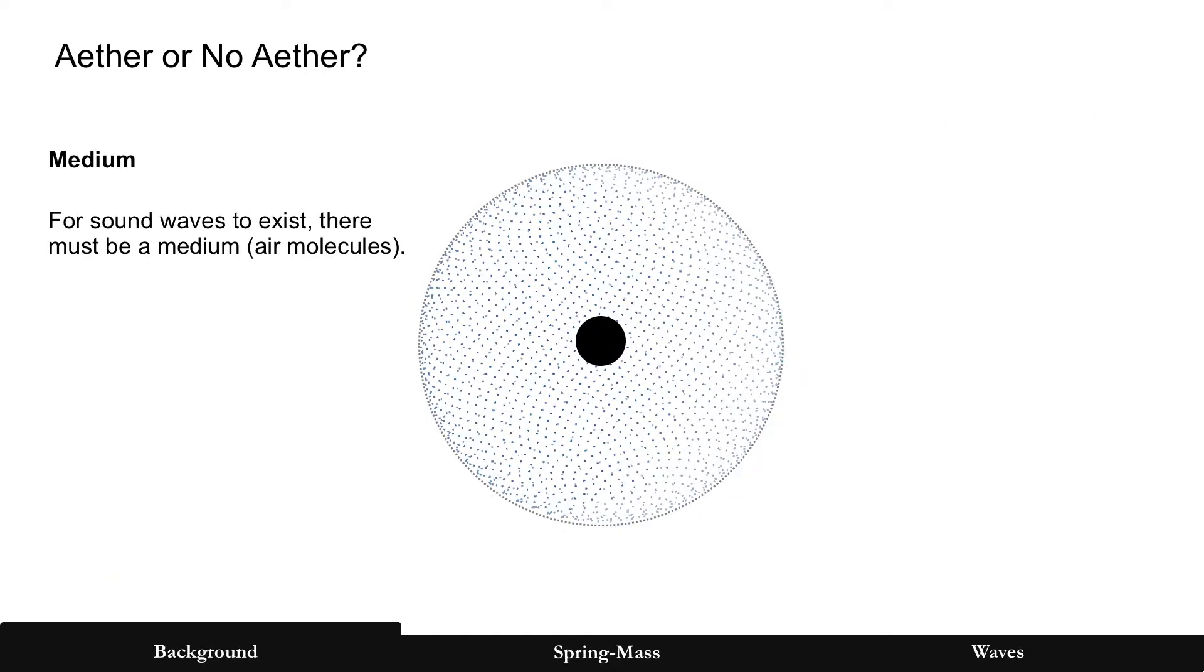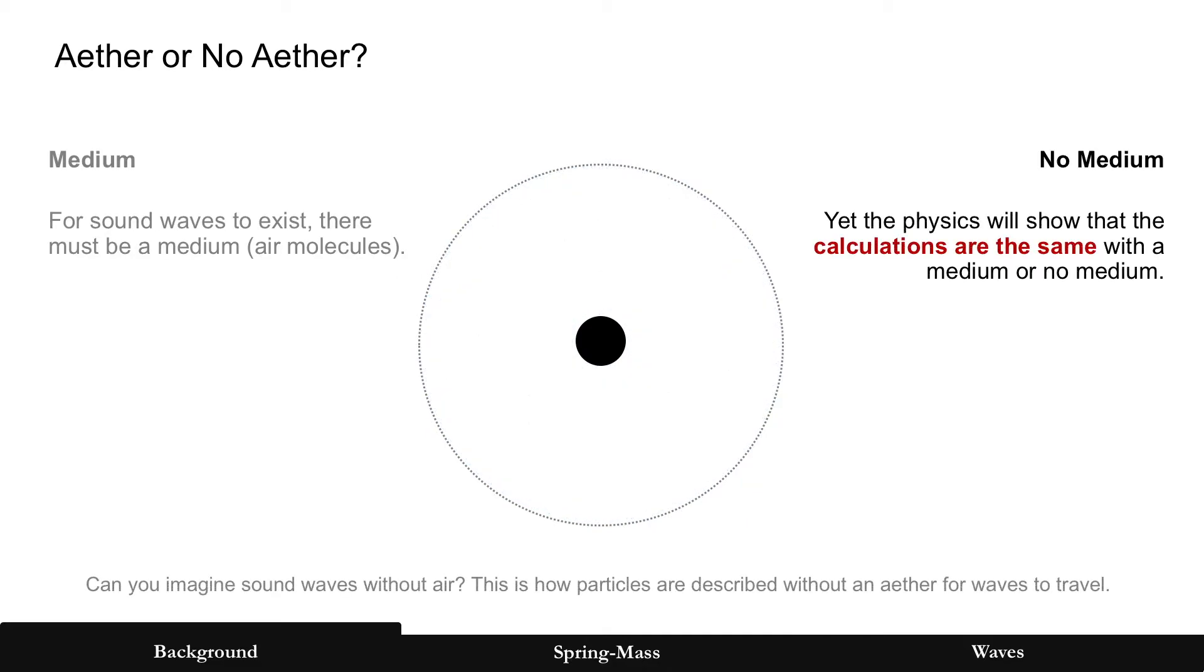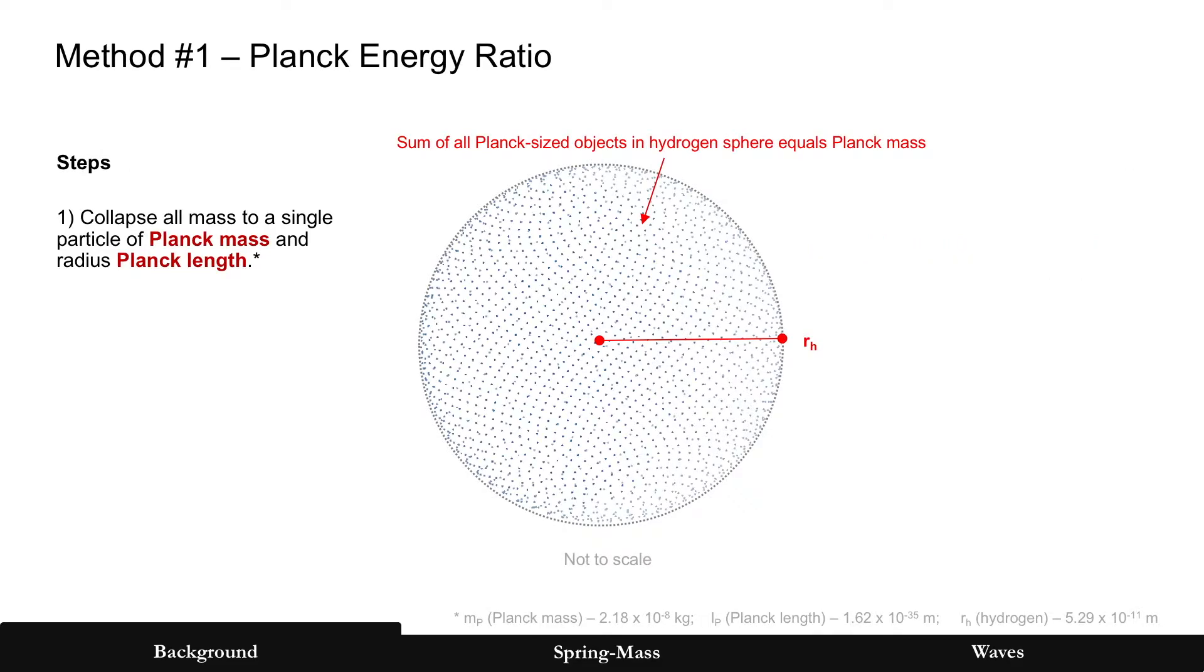And ether or no ether, medium. For sound waves to exist, there must be a medium. In this case, it's air molecules. Sound waves would not exist without it. But yet, the physics are going to be shown that the calculations can be the same medium or no medium. And this is literally how particles are described without a medium for waves to travel.